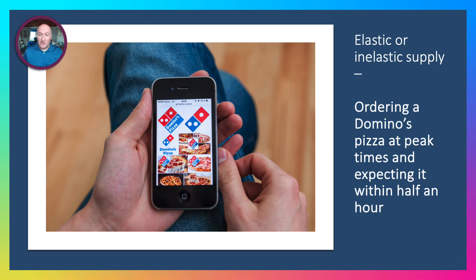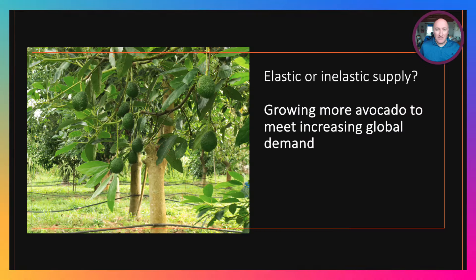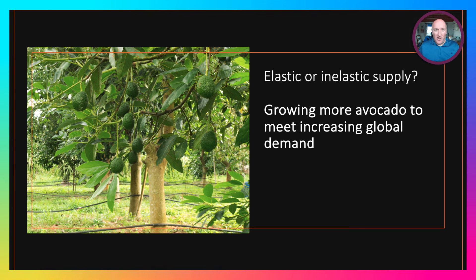Whereas at off-peak times, you can often get your pizza pretty quickly. And if you think about growing food — let's take the example of avocado with surging global demand — farming technologies are changing and in theory making supply more elastic by growing throughout the entire year. But in practice there are production delays between planting, growing, harvesting, processing, and getting products to market.